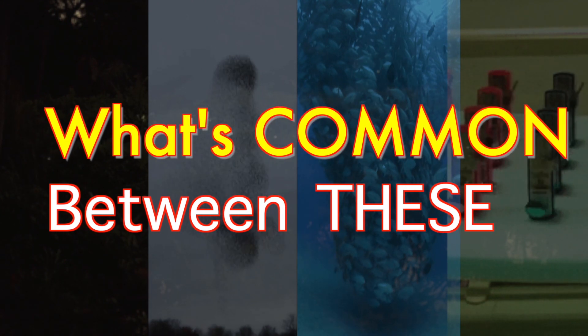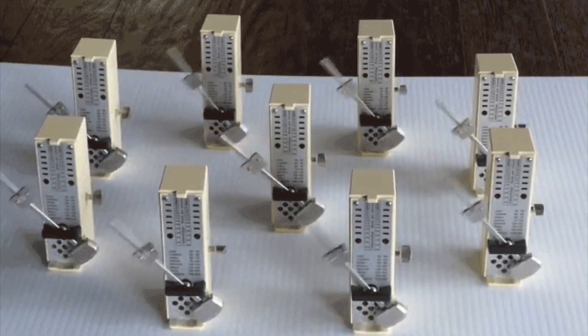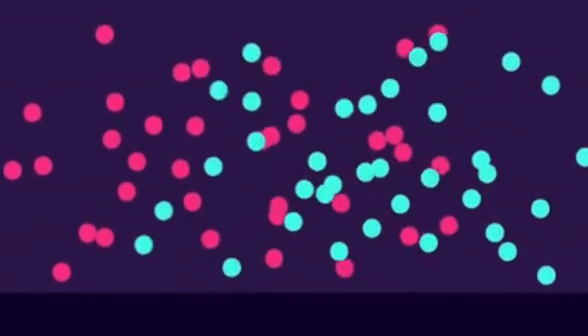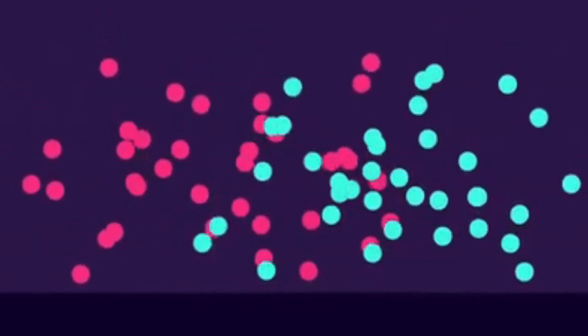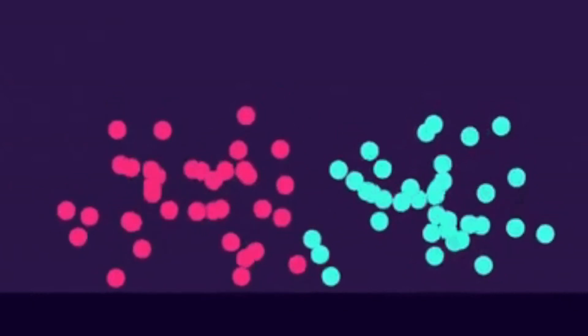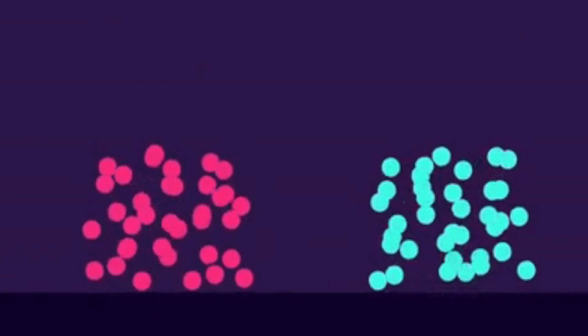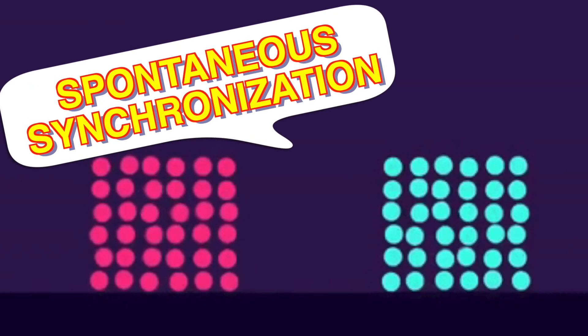Now coming to the basic question, what's common between the fireflies, the birds, the metronomes, as well as the fish? They all start as random motions, not synchronized at all, not aware about others or the group, but eventually within a short period of time they achieve spontaneous synchronization.